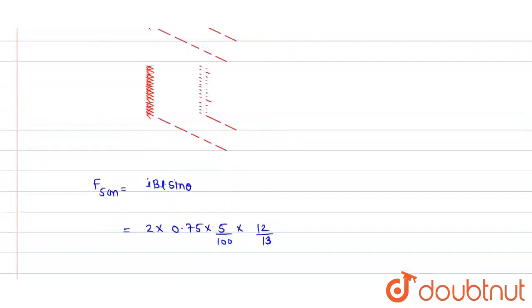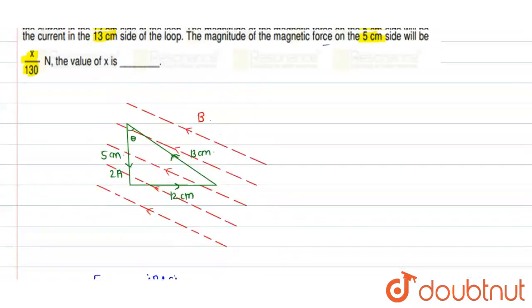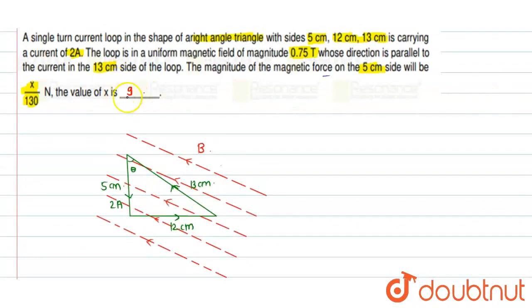And it is already given that it is equal to x by 130. X divided by 130, toh x ki value kitni aa jati? 9. And this is gonna be our final value, the final value of x is 9. That's all, thank you.